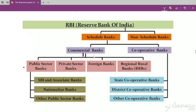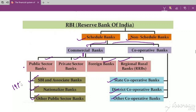Under RBI, we have scheduled banks, which are divided into commercial banks and cooperative banks. Cooperative banks are further divided into state cooperative, district cooperative, and other cooperative banks. Commercial banks are divided into public sector, private sector, foreign banks, and regional rural banks. In public sector, we have SBI and its associates, nationalized banks, and other public sector banks — that is 19 nationalized banks plus 5 associate banks plus 2 others.